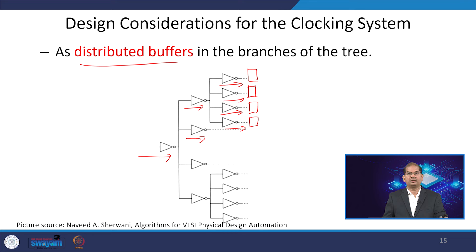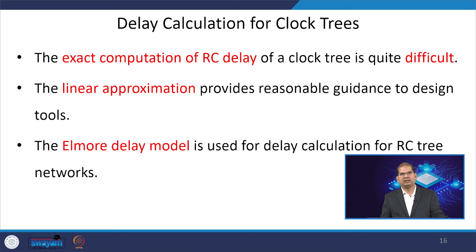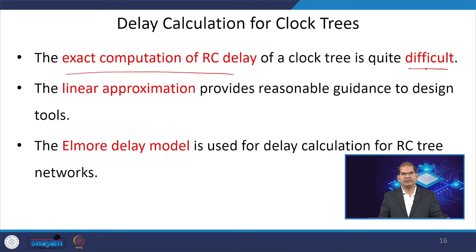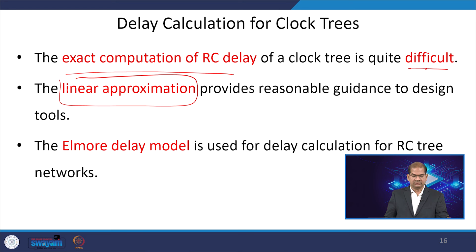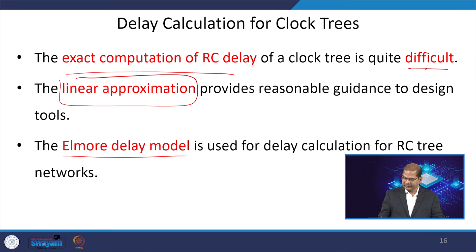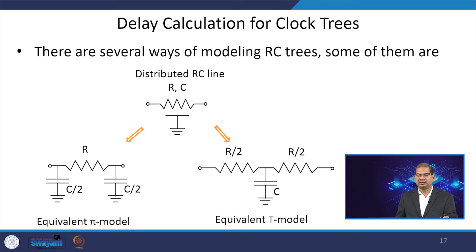We will now discuss how we can compute the interconnect delay of the clock tree. Exact computation of the RC delay of the clock tree is very difficult, so some approximations are used to find the delay through the clock tree with reasonable accuracy. We do some kind of linear approximation to get the result in less time. One of the most popular methods for finding the interconnect delay is called the ELMORE delay model, which is used to calculate the delay of the RC tree.